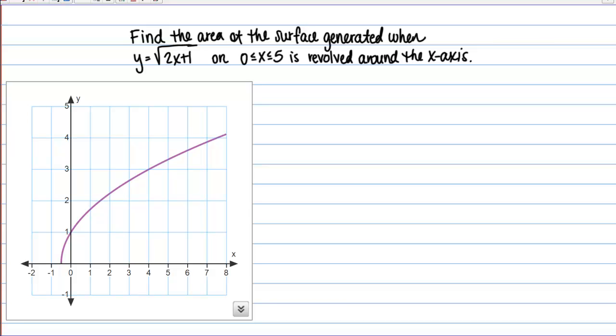In this example, we're going to find the area of the surface generated when y equals the square root of 2x plus 1 between x equals 0 and x equals 5 is revolved around the x axis.